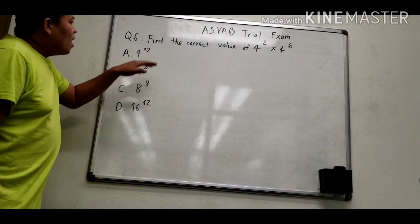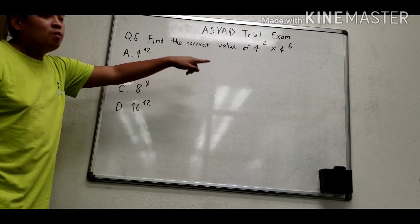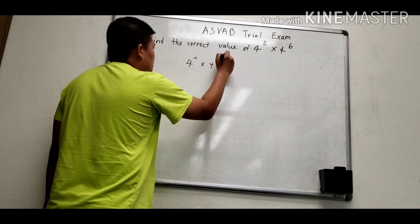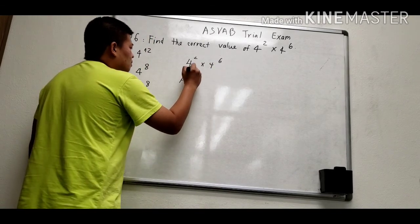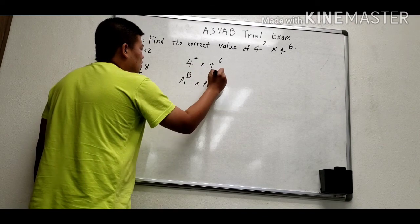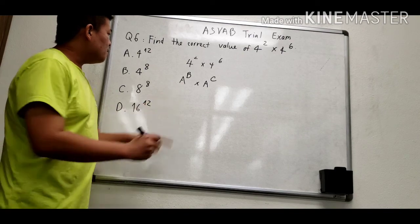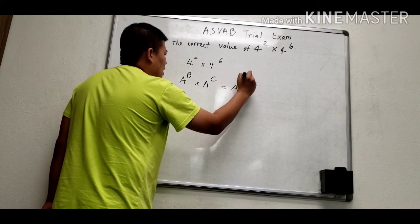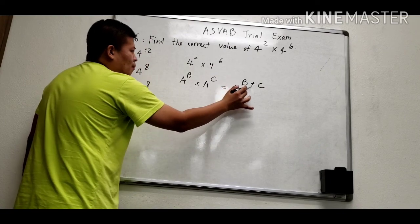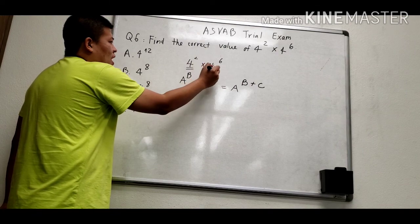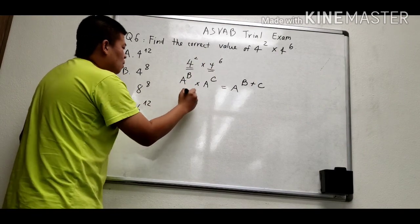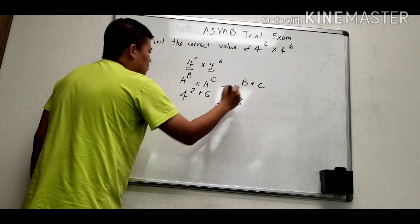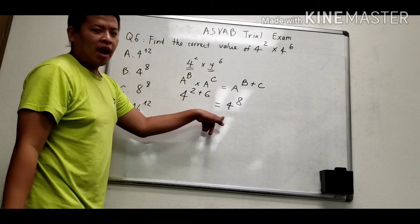Question number 6: Find the correct value of 4 to the power 2 multiplied by 4 to the power 6. We have a formula: if we have the same base number A, and they multiply together, the result is A to the power P plus Q. Here, both bases are 4, so we can apply this formula. 2 plus 6 is 8, so the answer is 4 to the power 8.